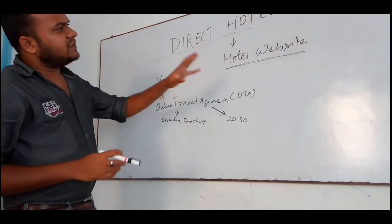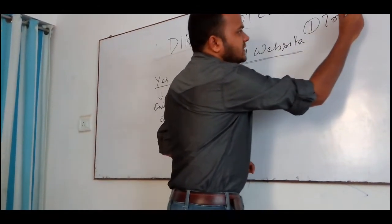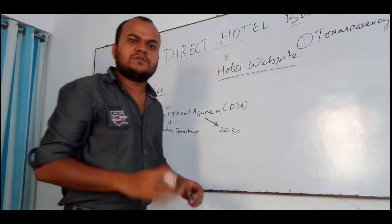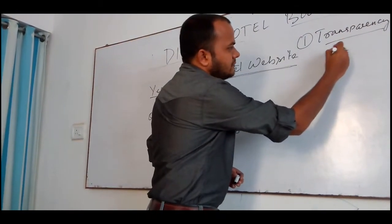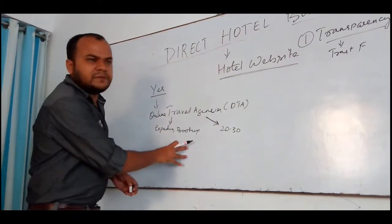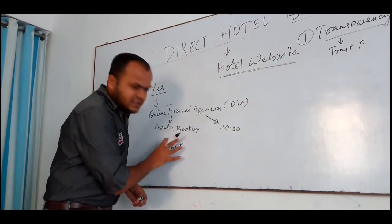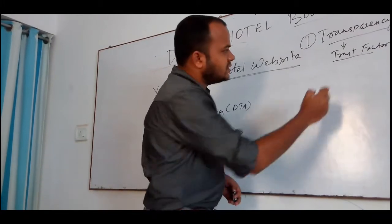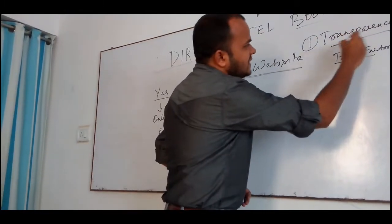The advantages of direct hotel booking — the first is transparency. Through direct hotel booking, a visitor can book a room through the hotel's own website. Transparency here refers to the trust factor involved. When a visitor comes to an OTA, it finds a different website for a different hotel, and the trust factor comes into question. But with direct hotel booking, since the website belongs to the hotel itself, visitors would not have a problem booking through it.